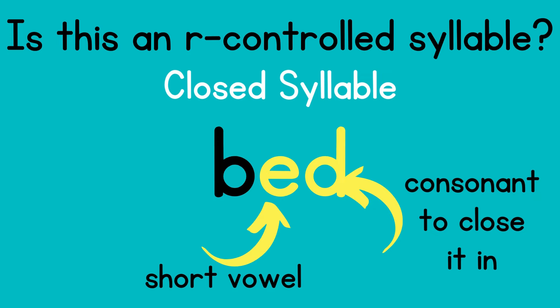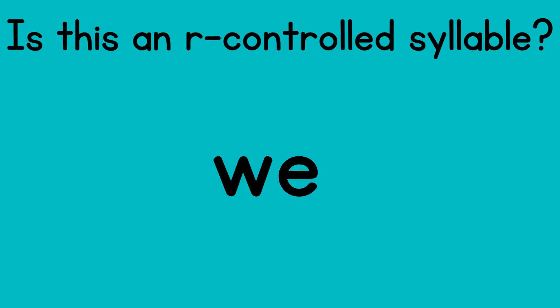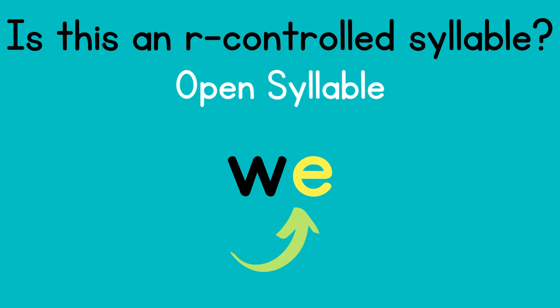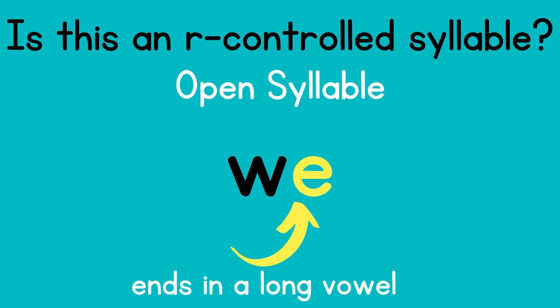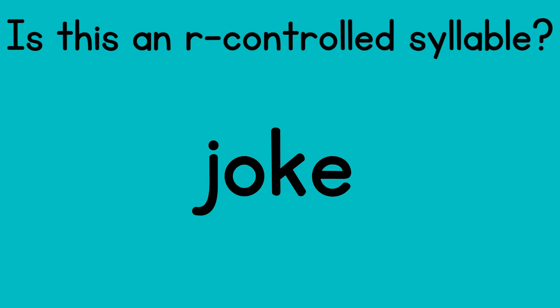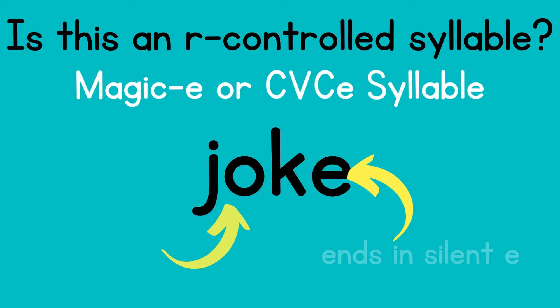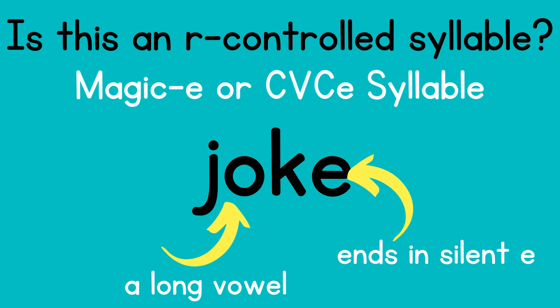'Bed' is called a closed syllable — closed syllables have a short vowel that is closed in by a consonant. Is 'we' an R-controlled syllable? The vowel E doesn't have an R after it, so no, it's not. 'We' is an open syllable — an open syllable ends in a long vowel. 'Joke' is also not an R-controlled syllable because there is no R. This is a magic-E or CVCe syllable — it has a long vowel, a consonant, then a magic or silent E at the end.